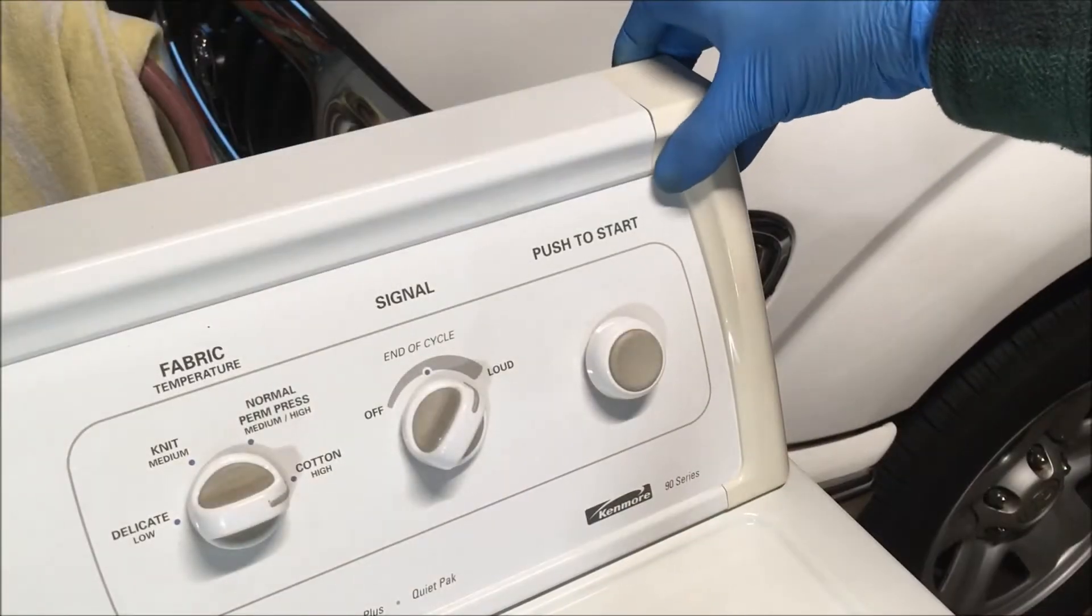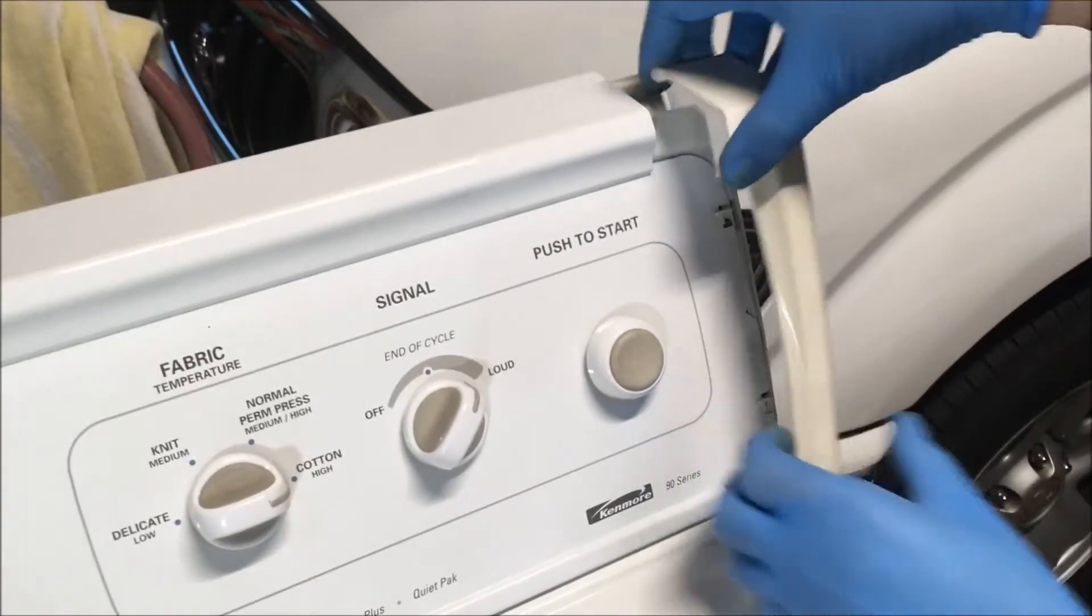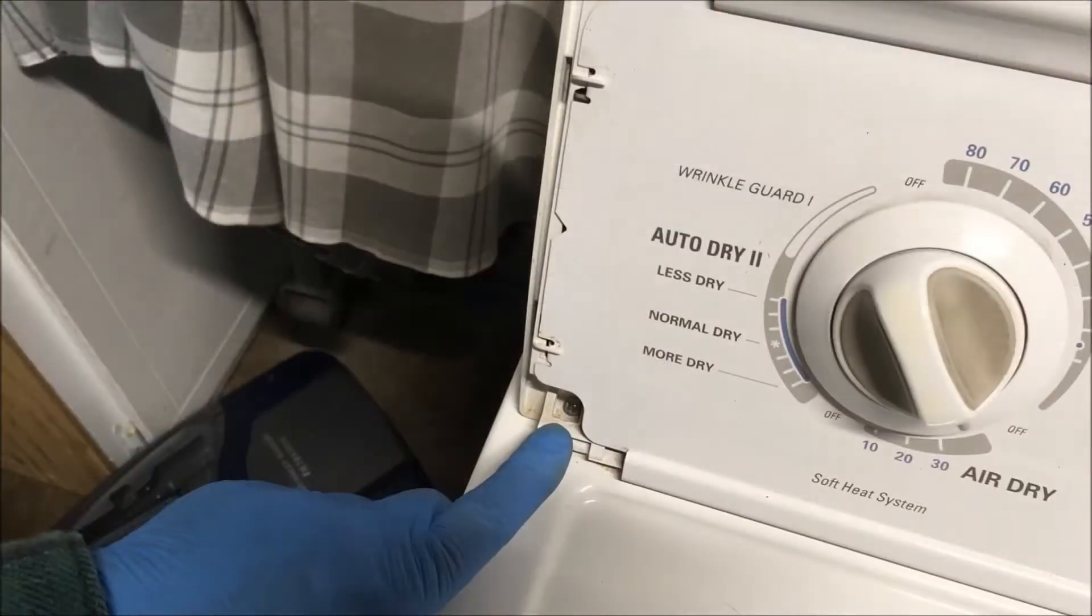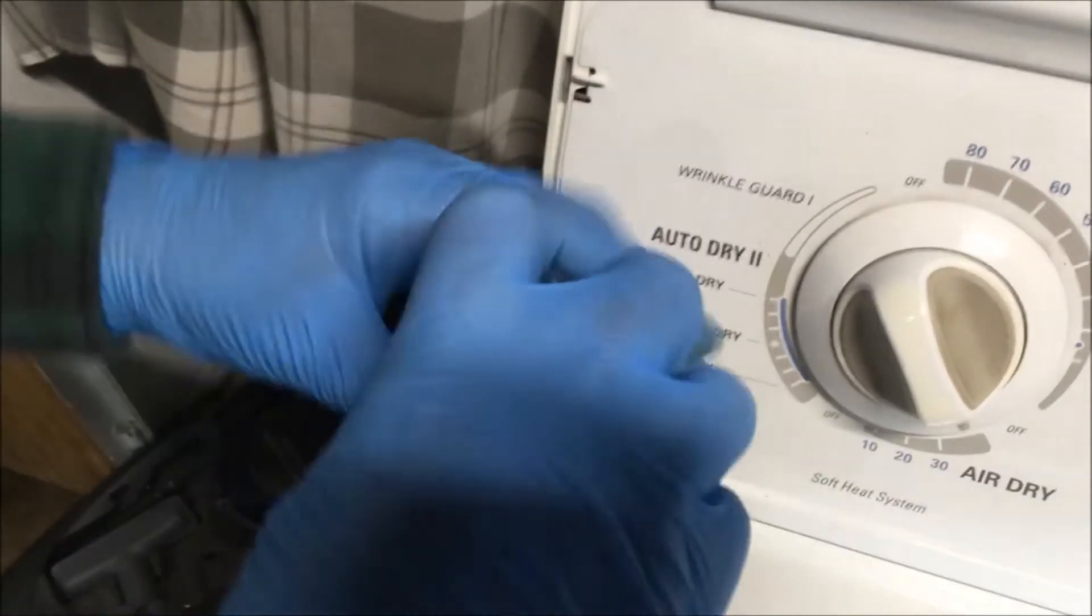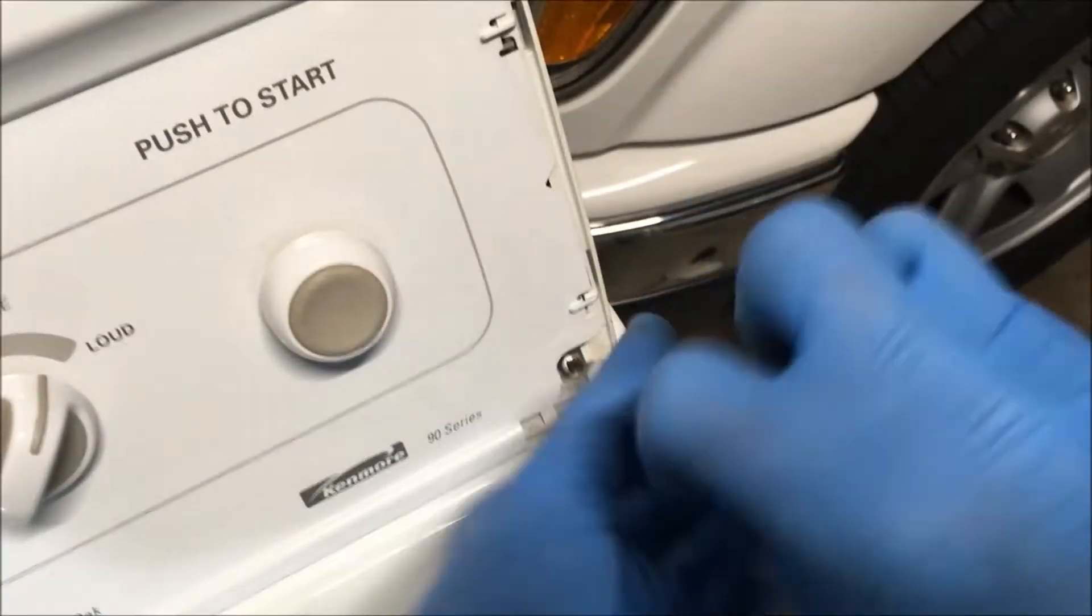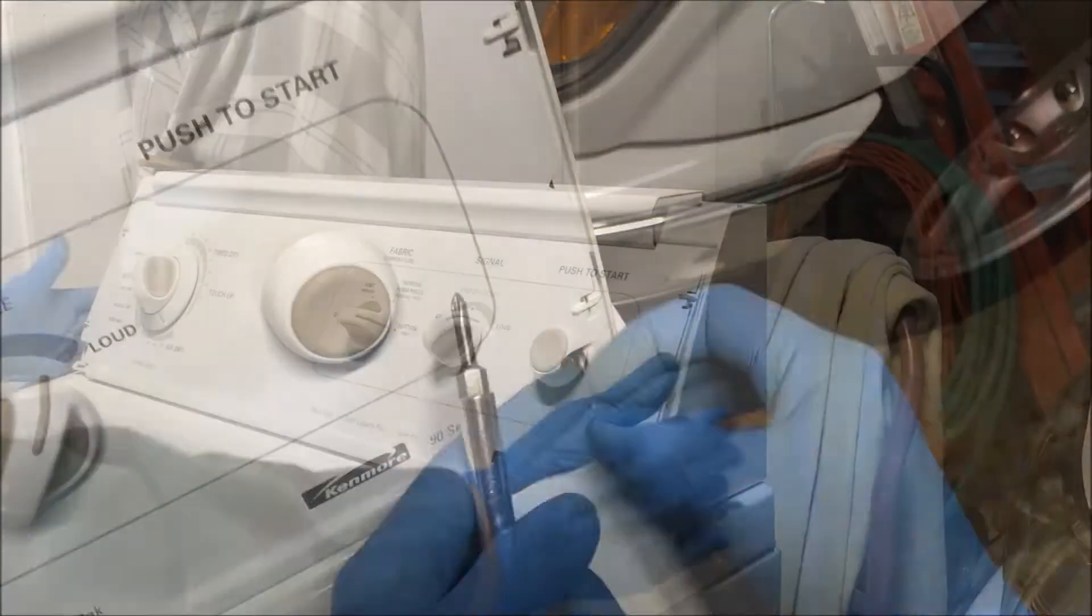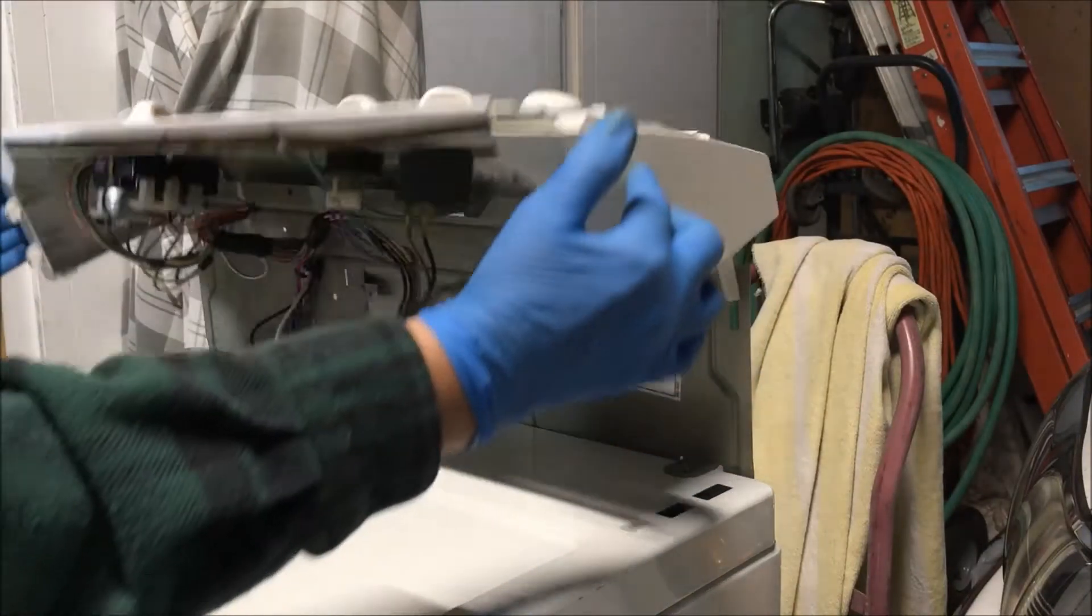You want to pry these end caps off. They should just pull forward. There's a screw at each end of this panel to remove. It's a Phillips. Now you pull the panel forward just a little bit and rotate it back.